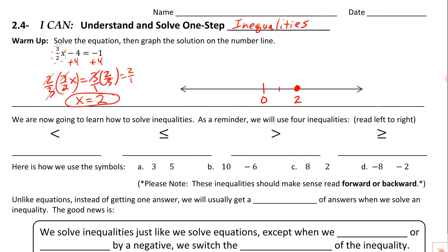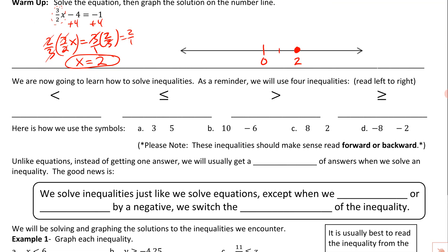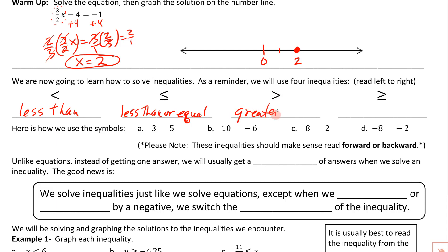Now we're going to remind ourselves how to solve inequalities, but first let's remind ourselves what those inequality symbols look like. Reading from left to right: the first one is less than. The next one has a little equal-to bar on the bottom, so that's less than or equal to. The one with the bigger mouth on this side is greater than. And then with the equal sign on it, that's greater than or equal to.